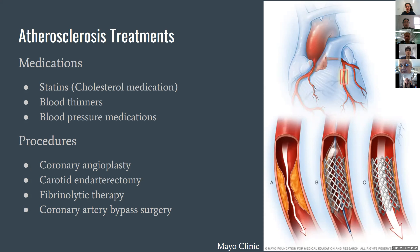The carotid endarterectomy is a different procedure in which plaques leading up to the brain are removed, helping prevent the risk of stroke when these plaques break off. Fibrinolytic therapy uses medications to help break down plaques through blood thinners. Coronary artery bypass surgery involves taking an artery from another part of the body, such as the leg, and placing it in place of the occluded artery so that blood can flow around it. All of these procedures can be done, but they often take a lot of time and we want to avoid them if possible.